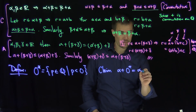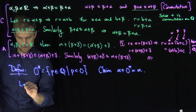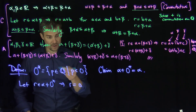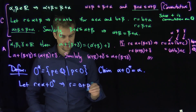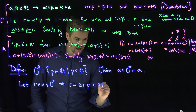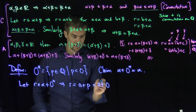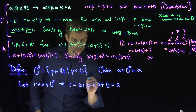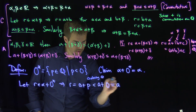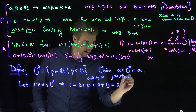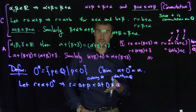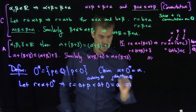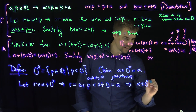We have to prove two inclusions. Let R be in alpha plus 0-star. This implies R is equal to A plus P, for some A in alpha and some P in 0-star. Now this is strictly less than A plus 0 by our ordering properties of the rational numbers, since P is less than 0 — that's ordering on Q. And so this is equal to A by the fact that 0 is the additive identity on the rational numbers — that's identity on Q. Since we've built Q already, we can exploit the field properties of Q to deduce the field properties of R. So R is less than A, which shows that alpha plus 0-star is a subset of alpha.